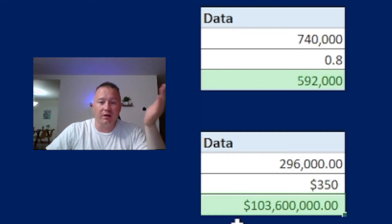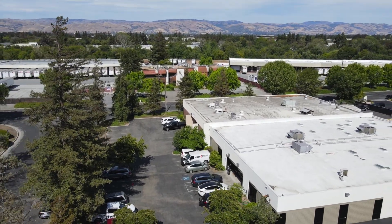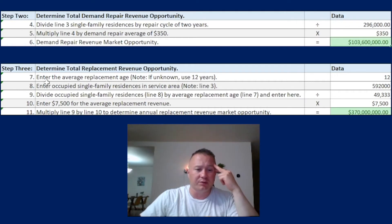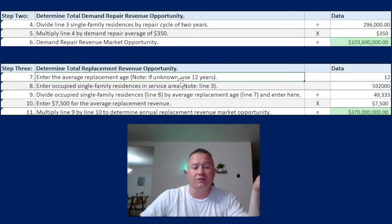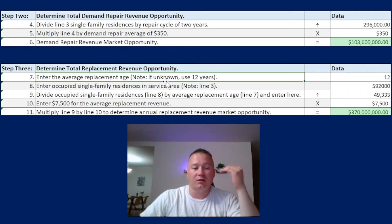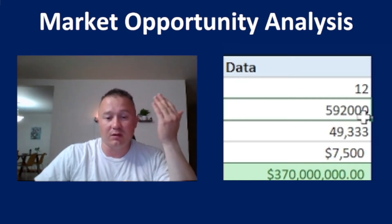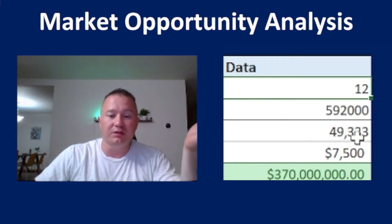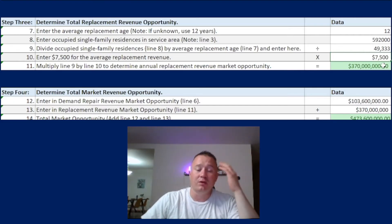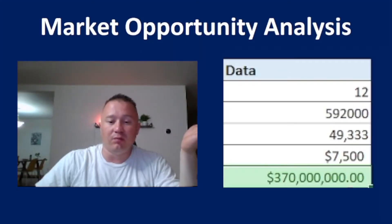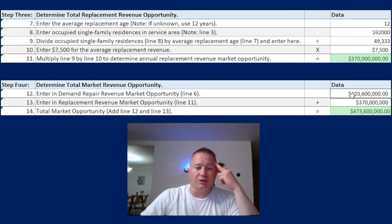Our company is Fuse HVAC Refrigeration Electrical and Plumbing. Step number three: determine total replacement revenue opportunity. We have the number 12 — that represents years. If we get information from the customer that a unit's age is more than 12 years, that unit has to be replaced. So 592,000 households in Santa Clara County divided by 12 years gives us almost 50,000 houses every year that might need an HVAC system replacement. At $7,500 average, the whole market replacement opportunity for the year is $370 million dollars.